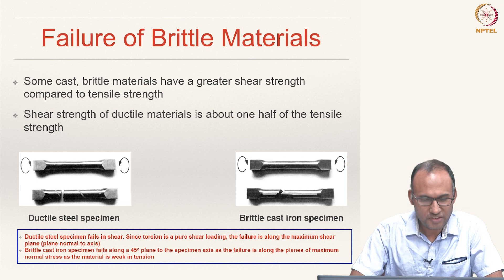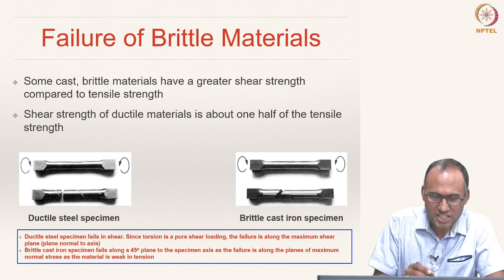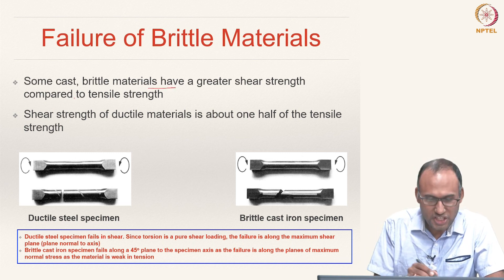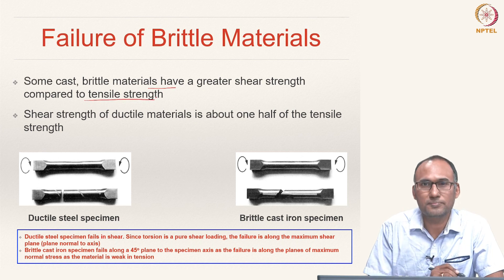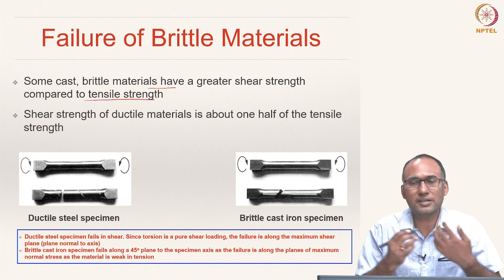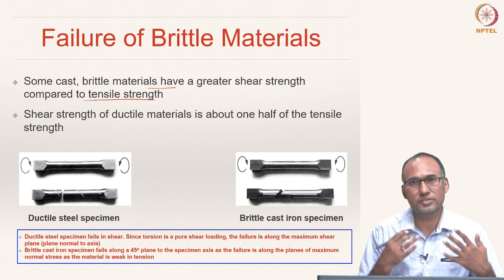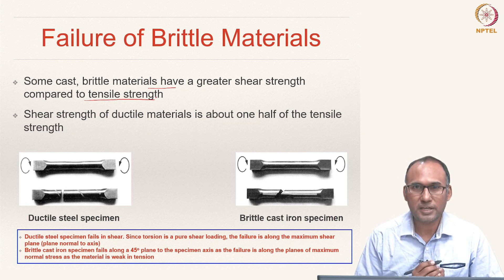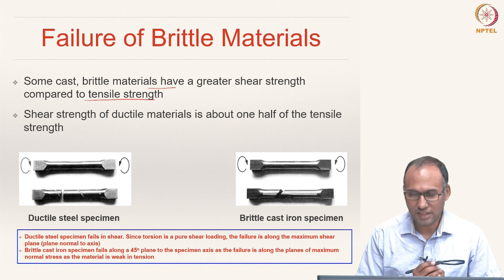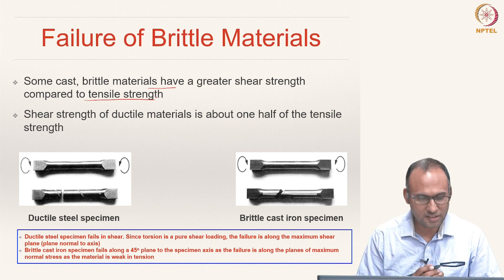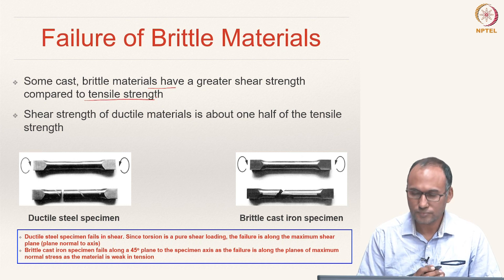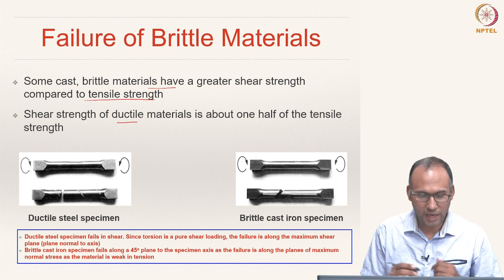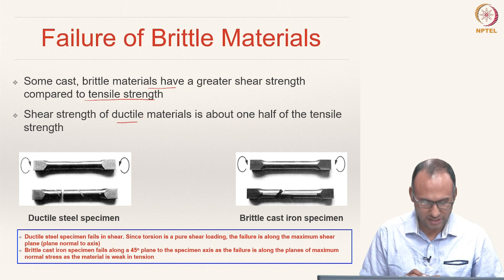Some brittle materials have greater shear strength compared to tensile strength. Normally for ductile materials, shear strength is one half of the tensile strength, but some materials — particularly brittle materials — may have a higher shear strength than tensile strength, whereas for ductile materials it is actually one half of the tensile strength.